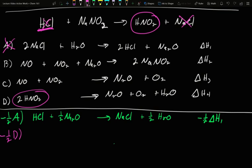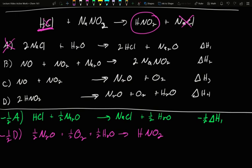What that will give us as we flip it around is we will have a half of N2O plus a half of O2 plus a half of water going to just one HNO2. I've created a modified D that will produce the HNO2 on the side that we want. Similarly, its enthalpy will change. It will be flipped, so negative one half of whatever delta H4 was. At the moment we've accounted for the HCl, the sodium chloride, and now the nitrous acid. The last one here is I need to account sodium nitrite.